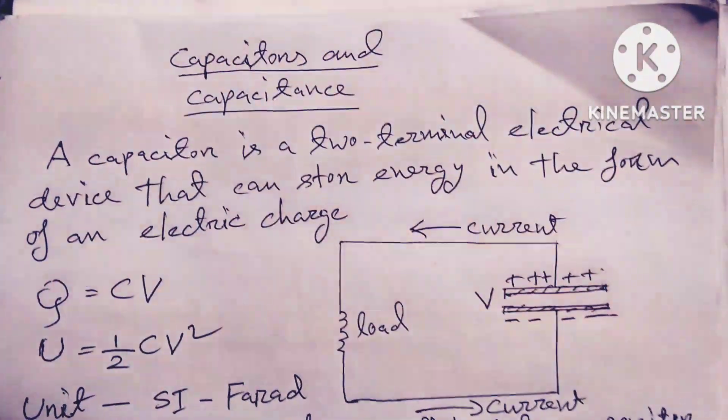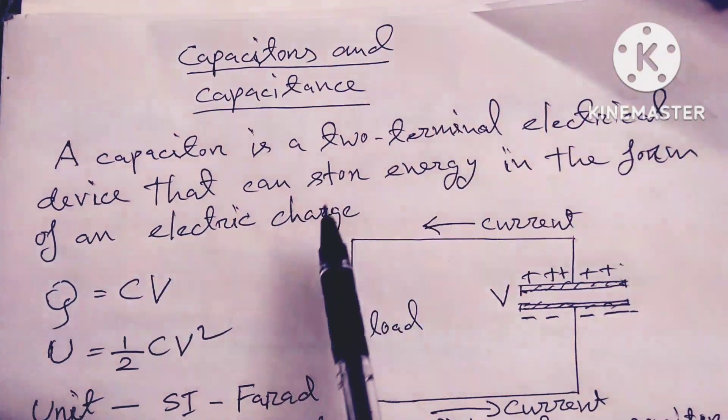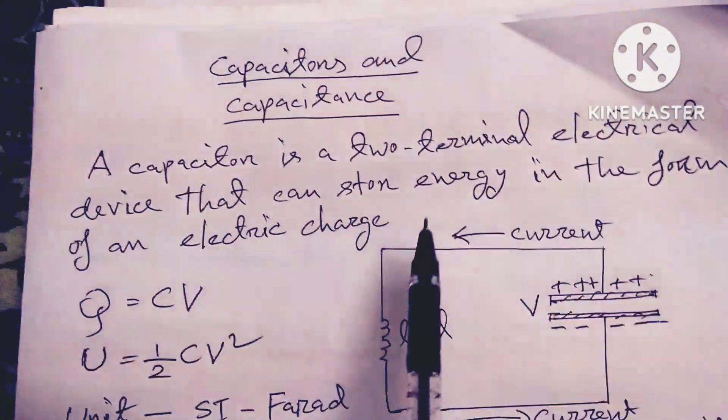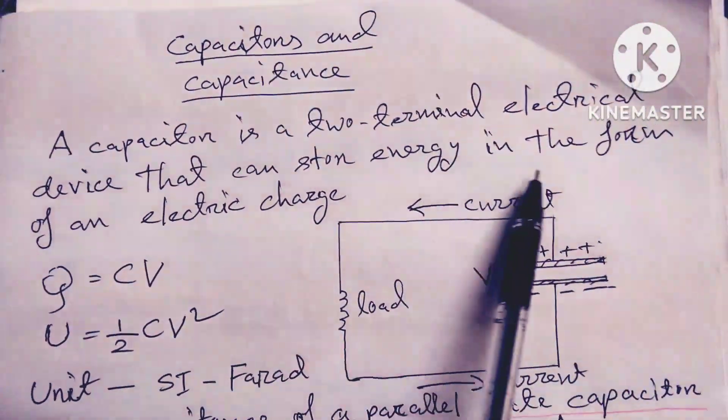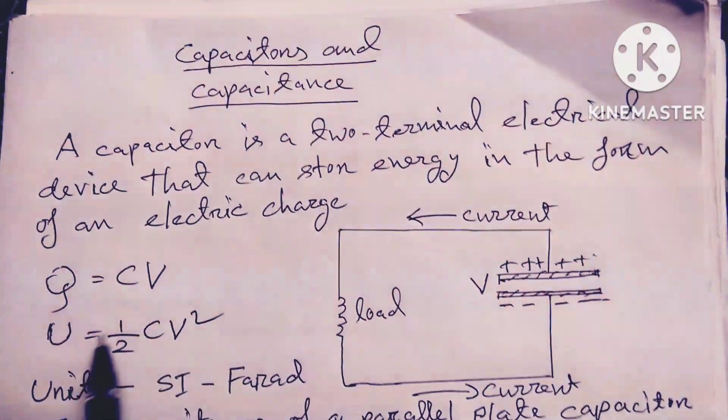Hello dear friends, welcome to my channel. Today's discussion is capacitor and capacitance. A capacitor is a two-terminal electrical device that can store energy in the form of electric charge. Q = CV, U =